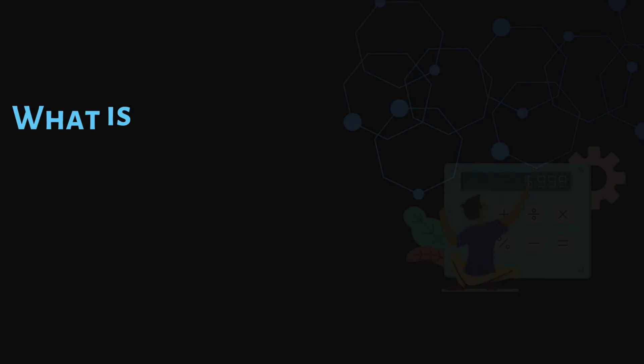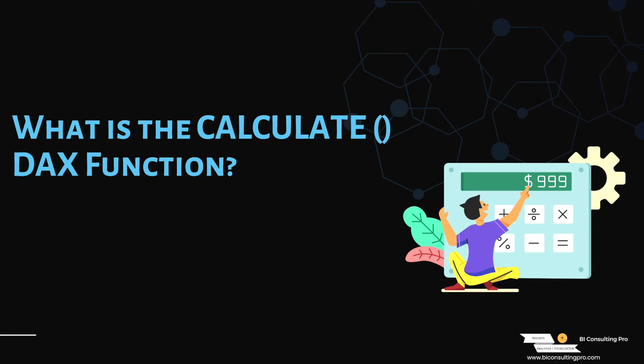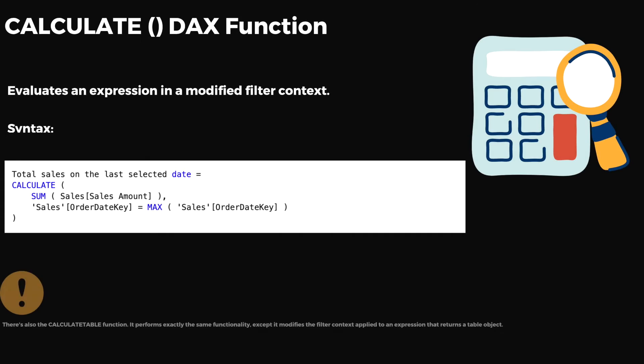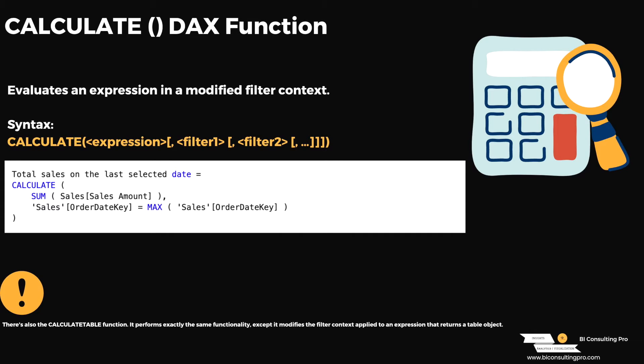The very first interview question I faced was: what is the CALCULATE DAX function? If you are working with Microsoft Power BI, you must know this one because CALCULATE is a very basic function. The CALCULATE DAX function is a filter modifier — it evaluates an expression in a modified filter context. On your screen you can see the syntax for CALCULATE, along with an example calculating total sales on the last selected date. You should also remember that CALCULATETABLE performs the same functionality except it modifies the filter context applied through an expression that returns a table object.